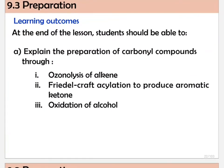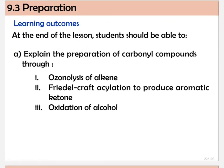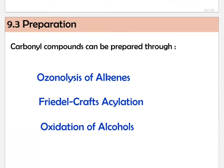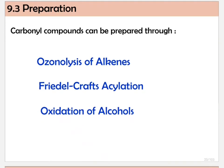For the learning outcome, at the end of this video, you should be able to explain the preparation of carbonyl through alkene, aromatic compound, and also alcohol. So there are three reactions that can be used to prepare carbonyl. The first one is ozonolysis of alkene, the second one is Friedel-Crafts acylation, and the third one is oxidation of alcohol.